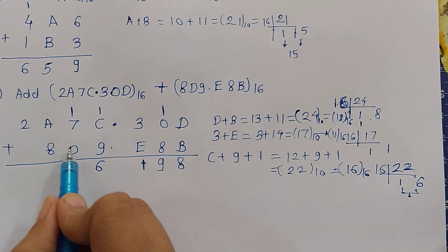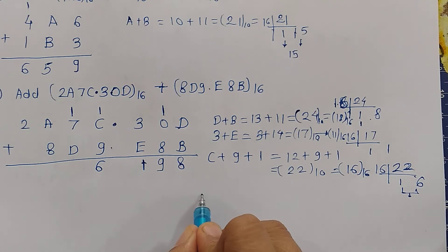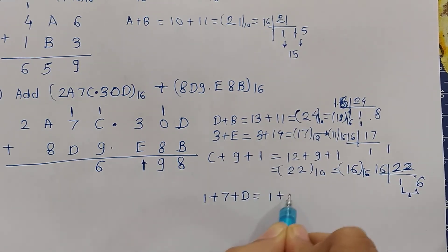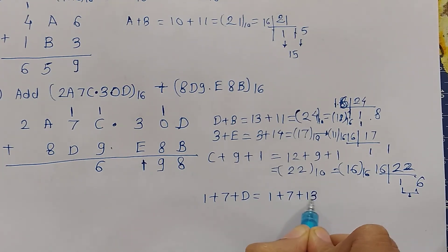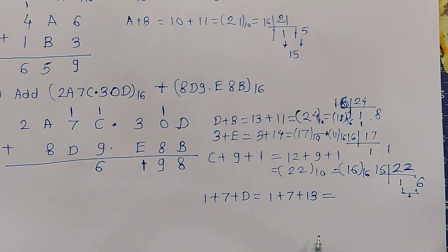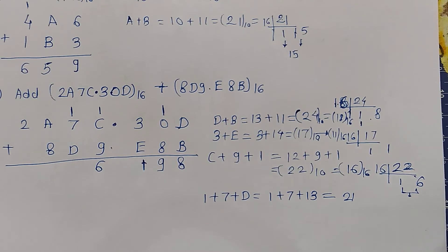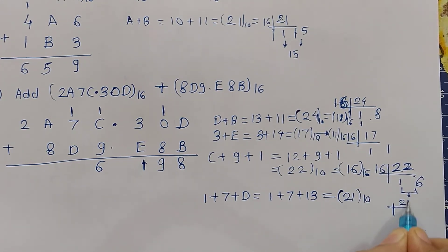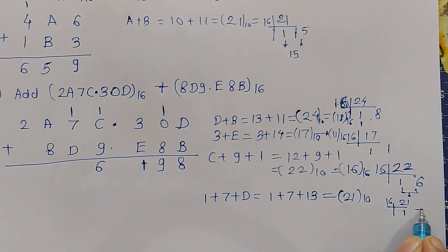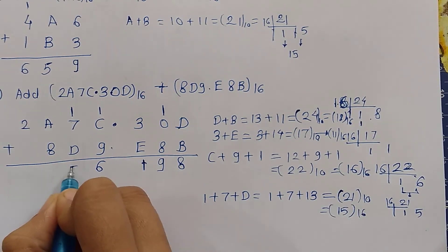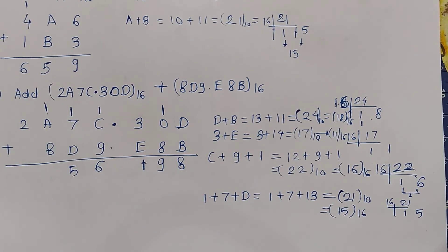Now the next digit: 1 plus 7 plus D. We need to add 1 plus 7 plus D, where D is 13. So 13 plus 7 is 20, and 20 plus 1 is 21, which is decimal. We convert it to hexadecimal: 16 goes once with 5 remaining. So the hexadecimal equivalent is 15. We write 5 and carry 1 to the next digit position.